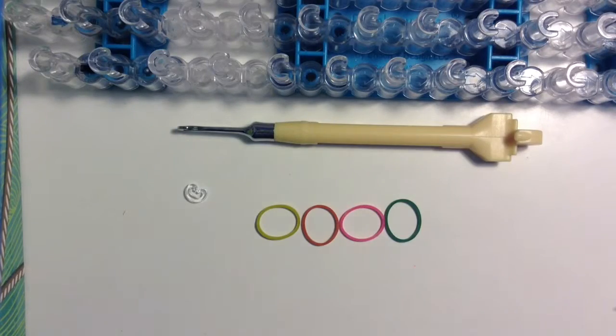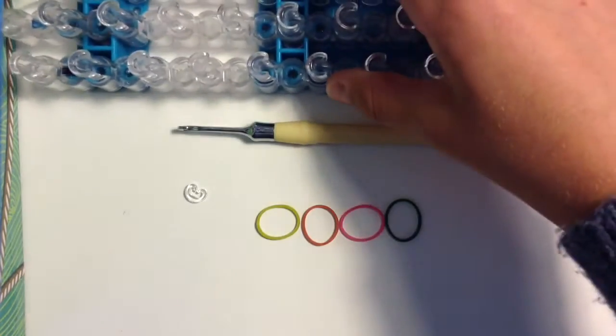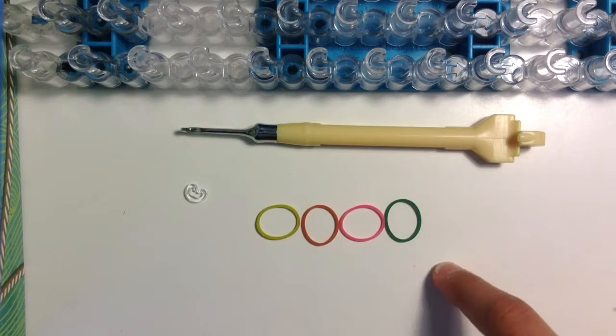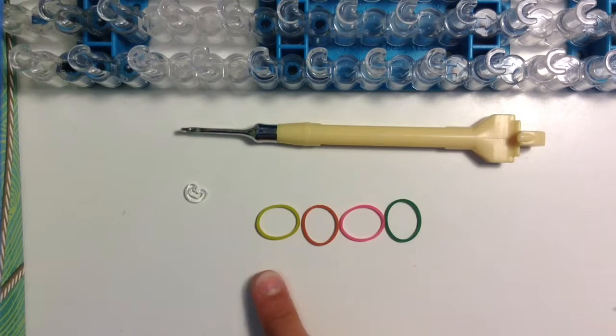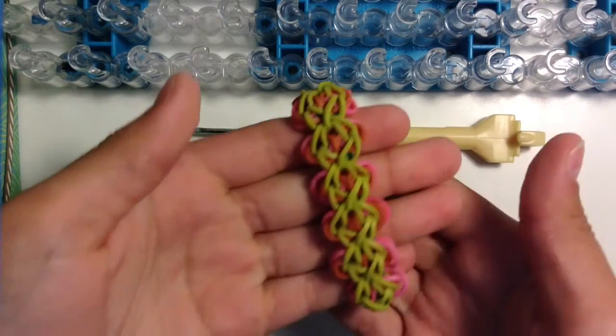The materials you will need are any type of loom, because this loom will be set in the staggered configuration. A hook, I'm using Erin Bloom metal tipped hook. Bands, today I'm using olive green, caramel, pink and dark green, same as this bracelet.